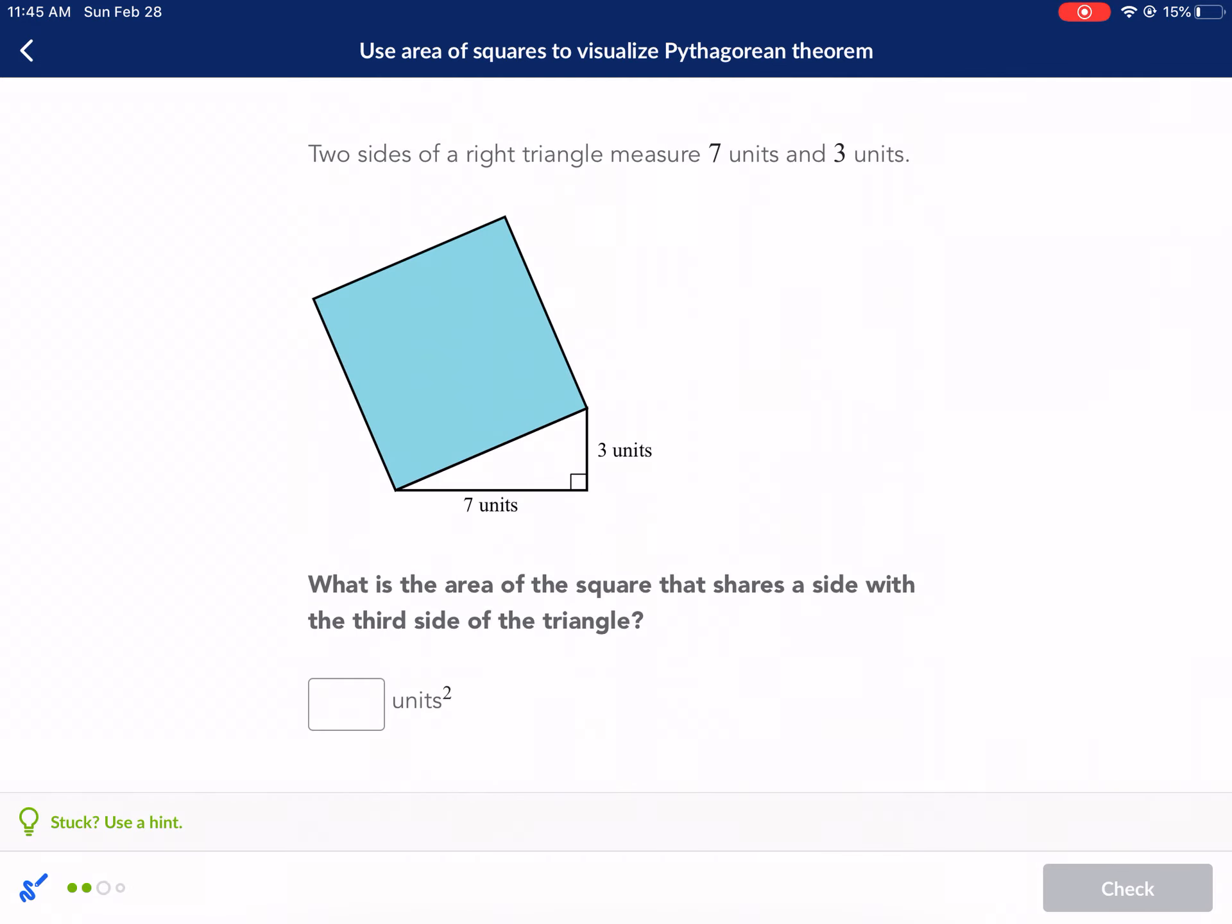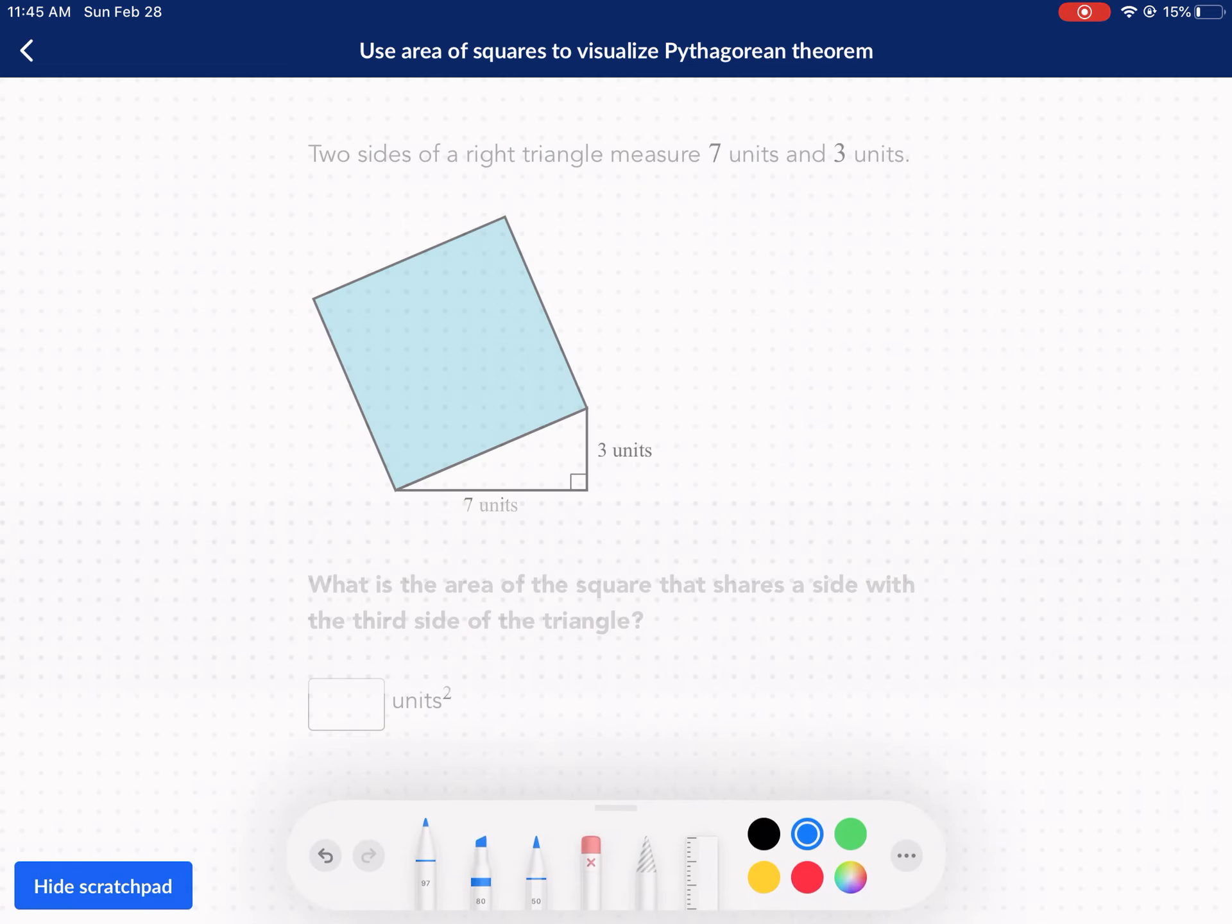Next one. Two sides of a right triangle measure seven and three. What is the area of the square that shares a side with the third side of the triangle? Kind of poorly written, but let's figure this out. We have seven and three. We know this relationship is seven squared plus three squared. If we call that A and B, and our hypotenuse is C, then A squared plus B squared equals C squared.